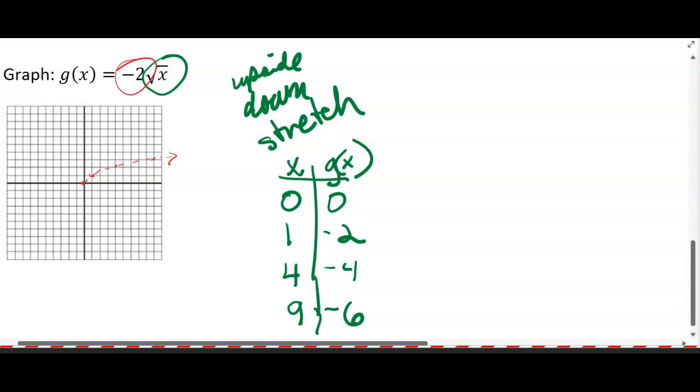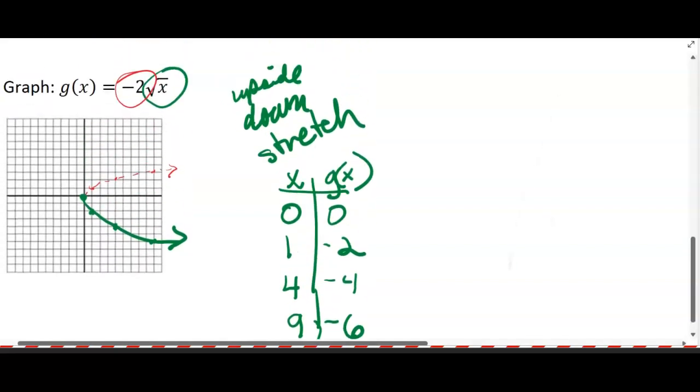We graph those ordered pairs: 0, 0; 1, negative 2; 4, negative 4; and 9, negative 6. Hopefully you can see it's a little bit stretched, and it looks like that. Okay, and is that the last one? I think so.